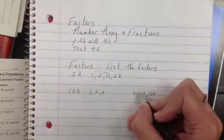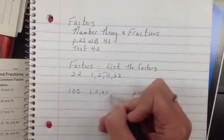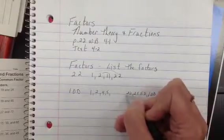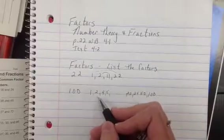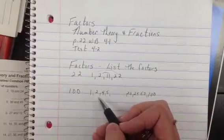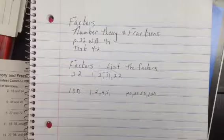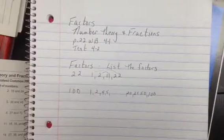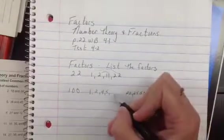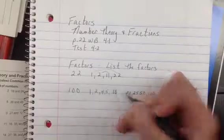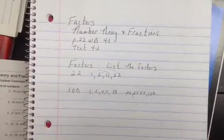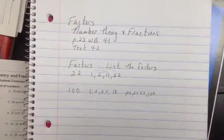Does 4 go into it? Yep, 4 goes in 25 times. 5 goes in 20 times. 6 doesn't go in because 3 didn't go in. 7 doesn't. 8, does 8 go in? Nope. Does 9 go in? Nope. Does 10 go in? Yep, 10 times 10 is 100. So these are all the factors of this number.